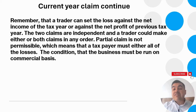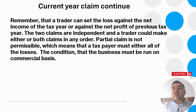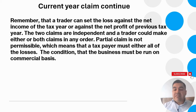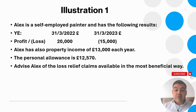Partial claim is not permissible. You need to use the losses to the point where you completely wipe off the profit — you cannot save the profit to preserve the personal allowance. This means a taxpayer must use all of the losses or none. The condition is that the business must be run on a commercial basis.